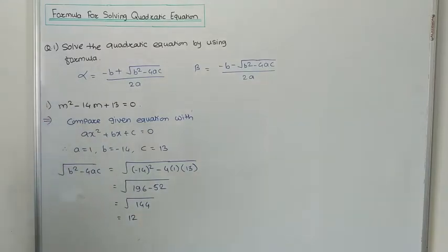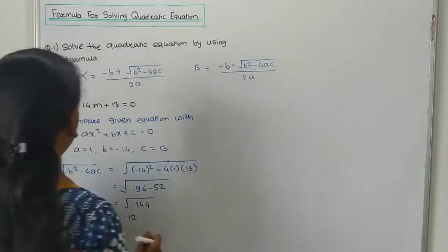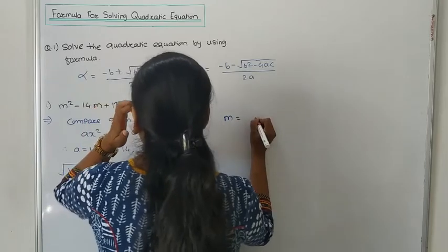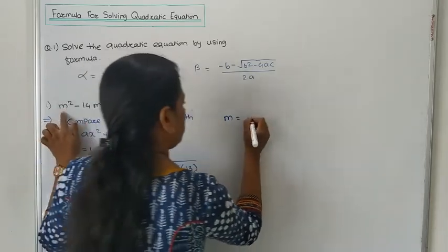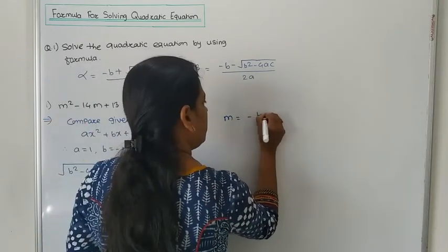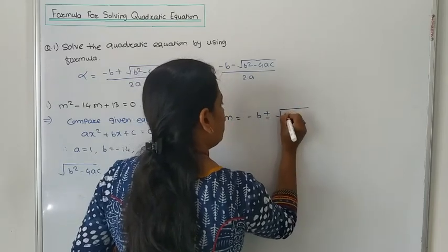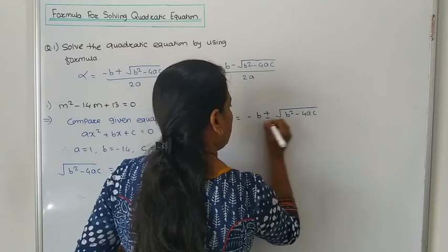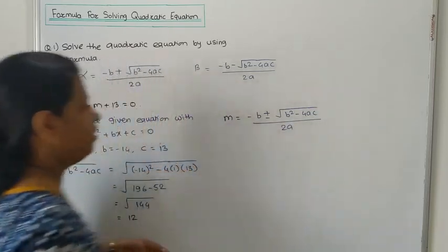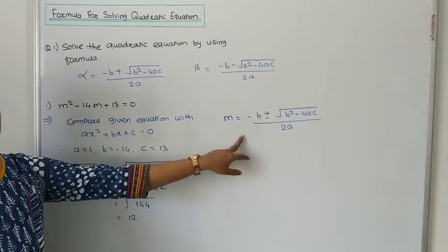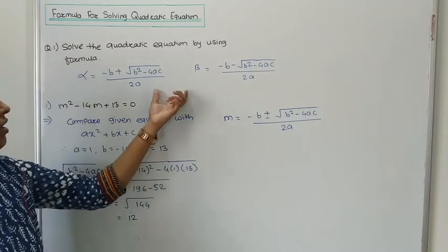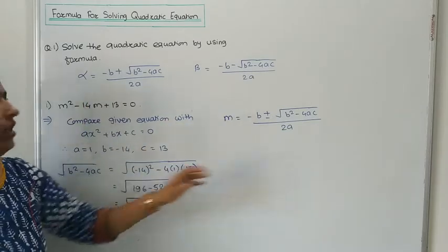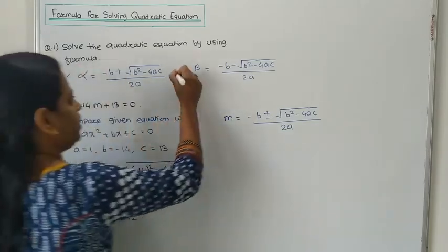Now use the formula. M = (-B ± √(B² - 4AC)) / 2A. The value of B is -14, so -B is 14. The square root value is 12. So M = (14 ± 12) / (2·1). For the plus case, that is alpha; for the minus case, that is beta.